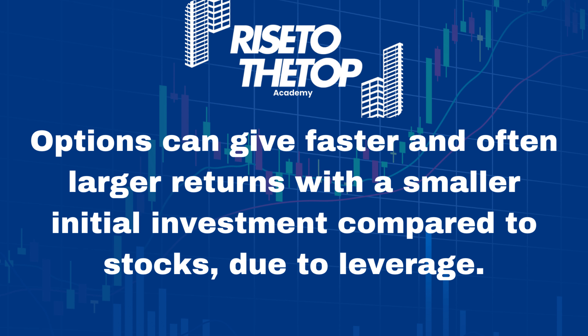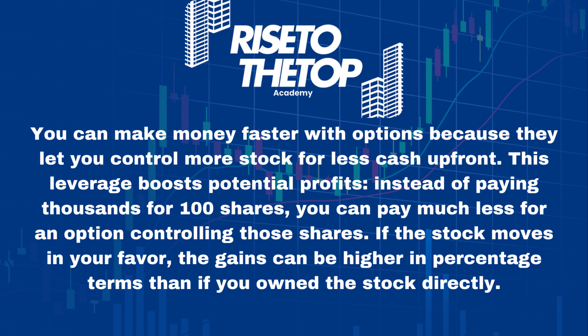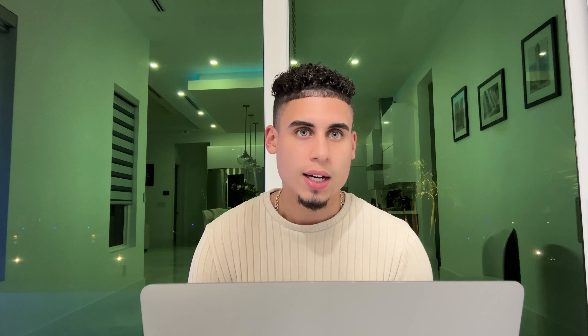Why trade options over stocks? Options can give a faster and often larger return with a smaller initial investment compared to stocks, due to leverage. You make money faster with options because they let you control more of a stock for less cash up front. Instead of paying thousands of dollars for 100 shares, you can pay much less for an option controlling those shares. If the stock moves in your favor, gains can be higher in percentage terms than if you owned the stock directly.